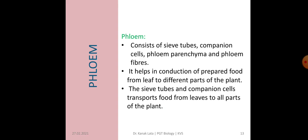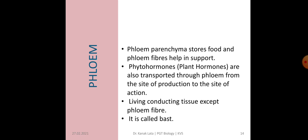Now, next is about phloem. The phloem consists of four types of cells: sieve tubes, companion cells, phloem parenchyma, and phloem fibre. Phloem helps in conduction of prepared food from the leaf to different parts of the plant, and also hormones from the site of production to the site of action. The sieve tubes and companion cells transport food from leaves to all parts of the plant. Phloem parenchyma stores food and phloem fibre helps in support and mechanical strength. Plant hormones are also transported through phloem from the site of production to the site of action.